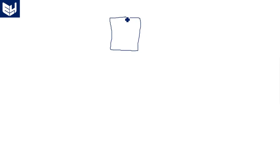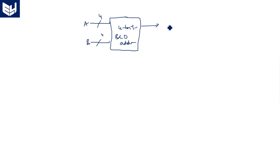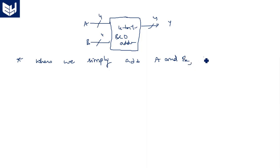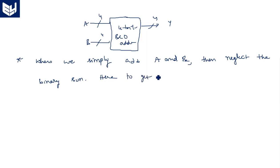We are taking a 4-bit BCD adder. Two 4-bit numbers A and B — A is of 4-bit size and B is of 4-bit size — and we are having one output which is the addition result, also of 4-bit size, output Y. When we simply add A and B, we need to get the output in BCD, so we will use a BCD adder.